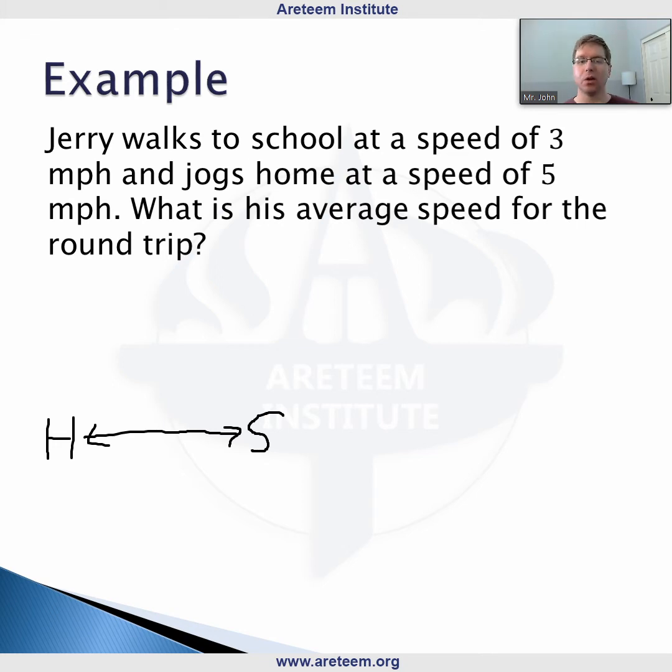We know that going from home to school, he's walking at a speed of 3 miles per hour. So this is one direction, 3 miles per hour.